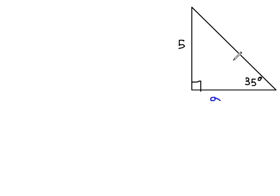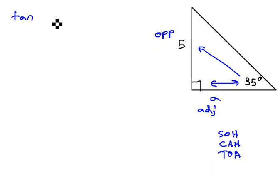So, from the 35, 5 would be called the opposite side. A, being between the 35 and the right angle, would be the adjacent side. And if I think about SOH CAH TOA, which one uses opposite and adjacent? The tangent does. So I'm going to take the tangent of my angle. The tangent of 35 is equal to the opposite over adjacent, or 5 over a.